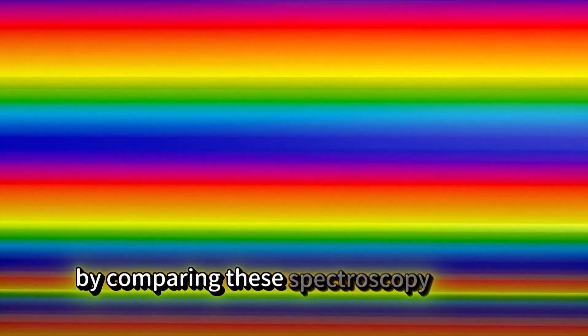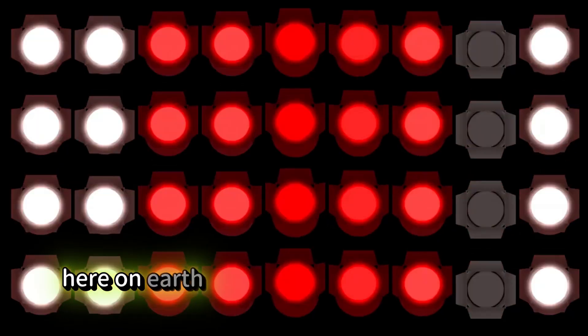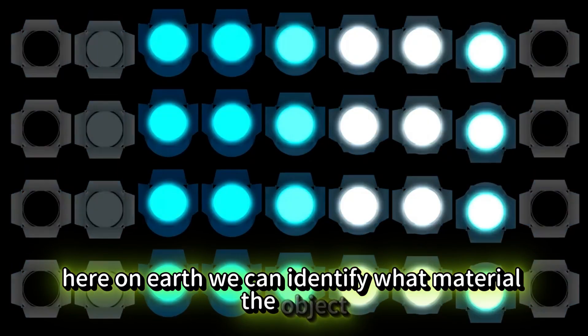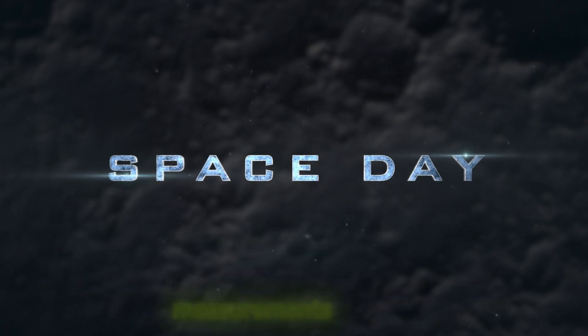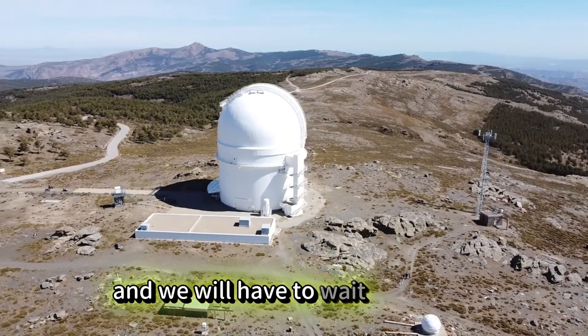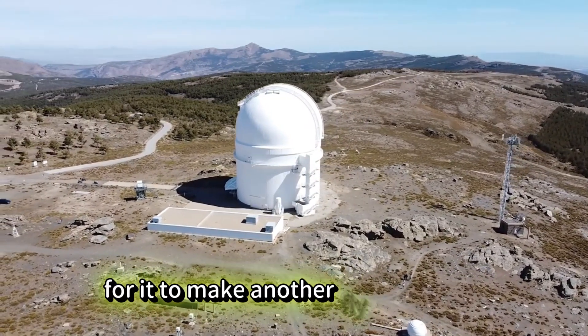By comparing these spectroscopy graphs with materials here on Earth, we can identify what material the object must be made of. This object is too far and dim for us to perform measurements like this, and we will have to wait until 2028 for it to make another flyby of Earth. Only then will we be able to do spectroscopy observations and confirm if it really is Snoopy.